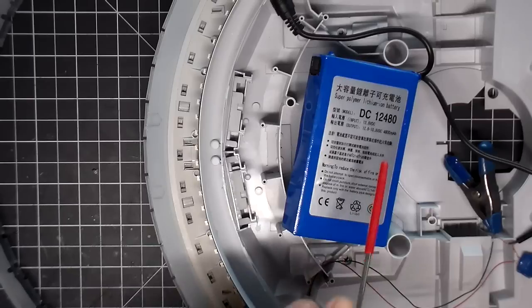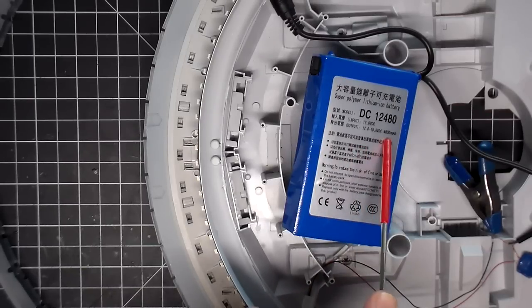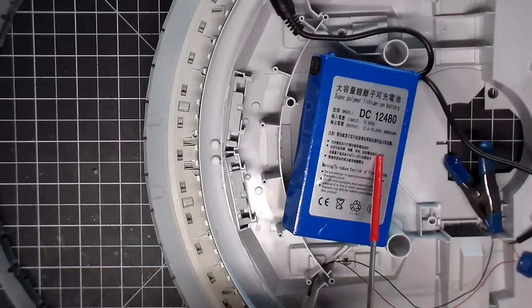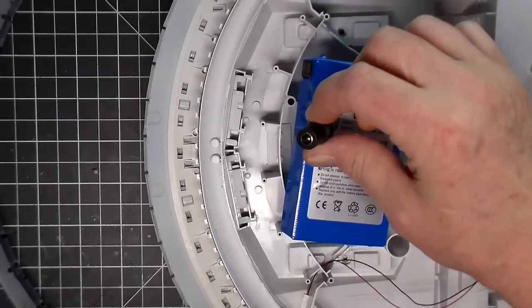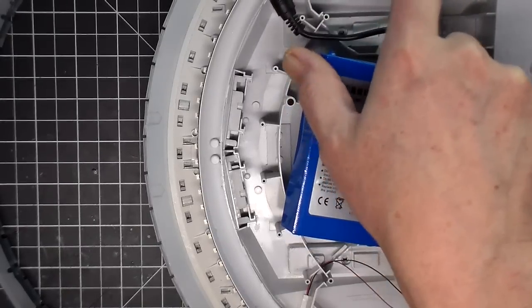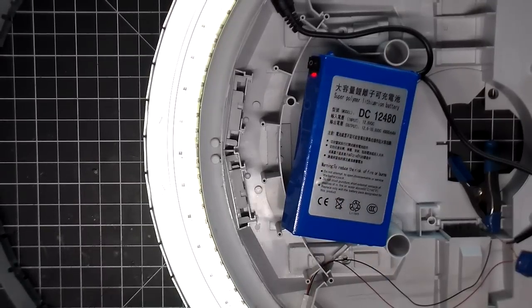I also upgraded from the 9 volt to a rechargeable 12 volt, this is a 4800 milliamp. I got it off of eBay, I will put a link in the description. So I'll be able to recharge it and it already has an on-off switch, so the lights are a whole lot brighter. It's amazing what four more volts will do for you. But it's a lot brighter, it looks a lot better.